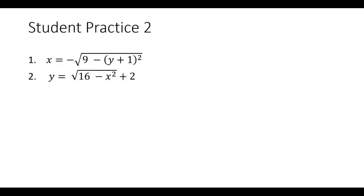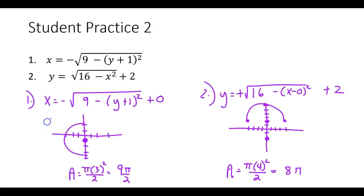Go ahead and try graphing these and finding the area of each semicircle. Pause the video and when you unpause, the answers will be up. Number 1: center is at (0, -1), radius is 3, and it's the left half of the circle. The area is pi r squared over 2, which is 9 pi over 2. Number 2: center is at (0, 2), it's the top half of a circle, radius is 4, and the area is 8 pi.